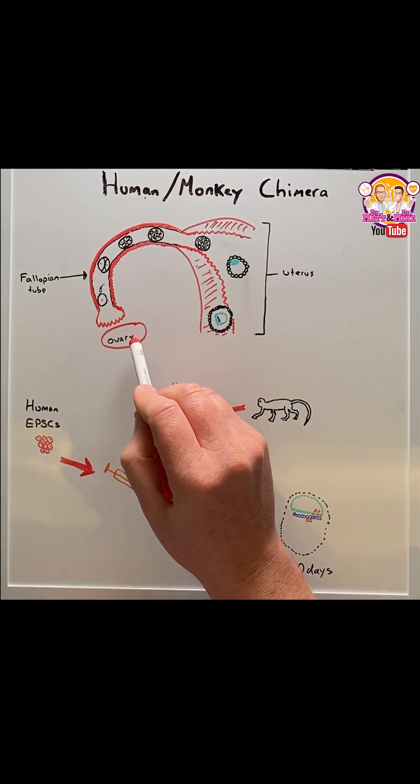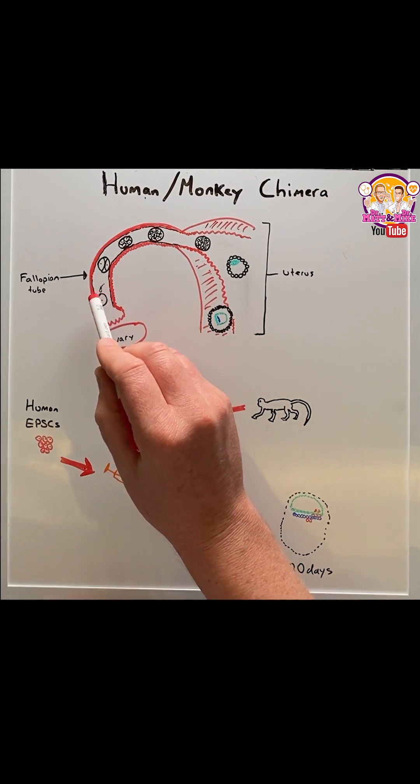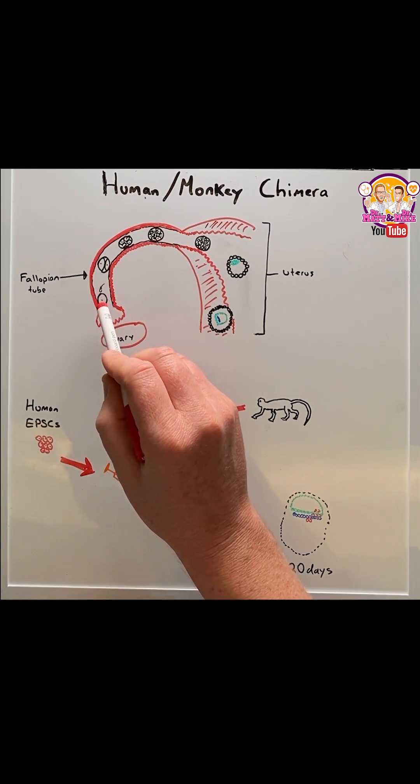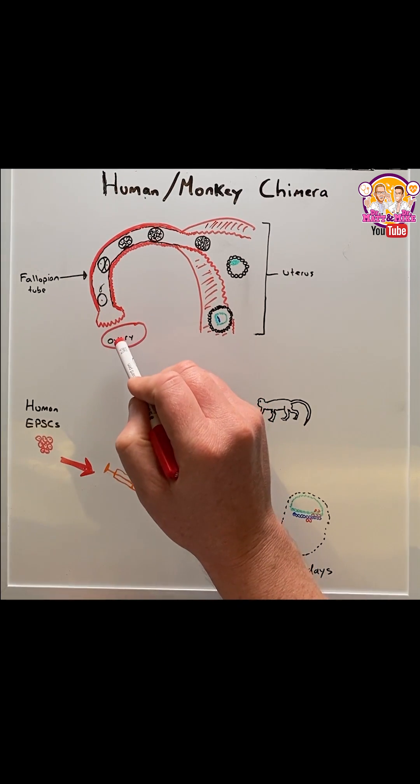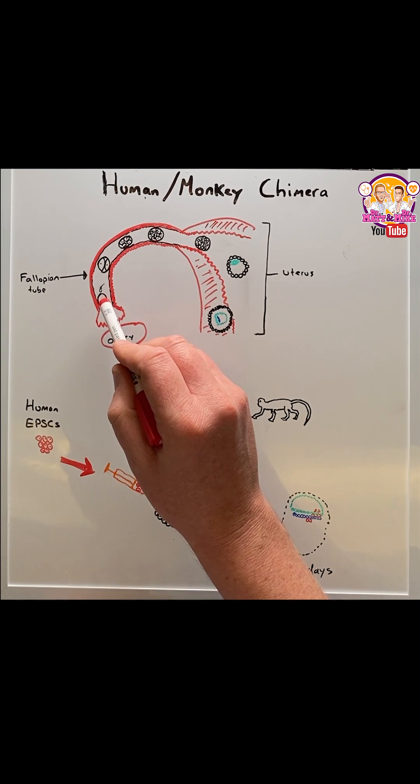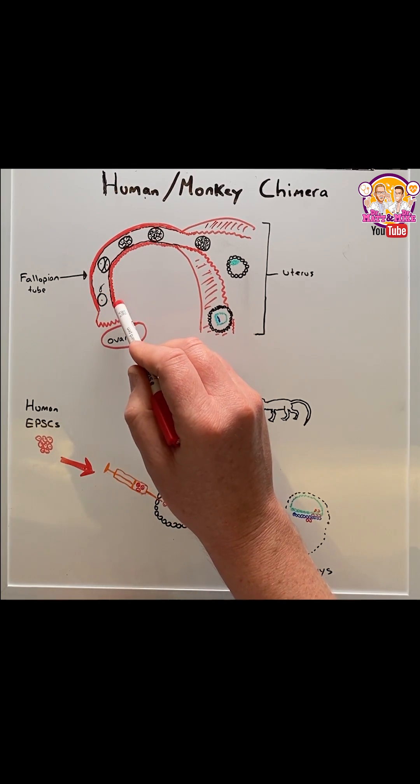Normally an egg is released out of the ovary and enters the fallopian tube where it meets the sperm. Twelve to twenty-four hours later after ovulation, the egg is fertilized and a one cell embryo is produced.